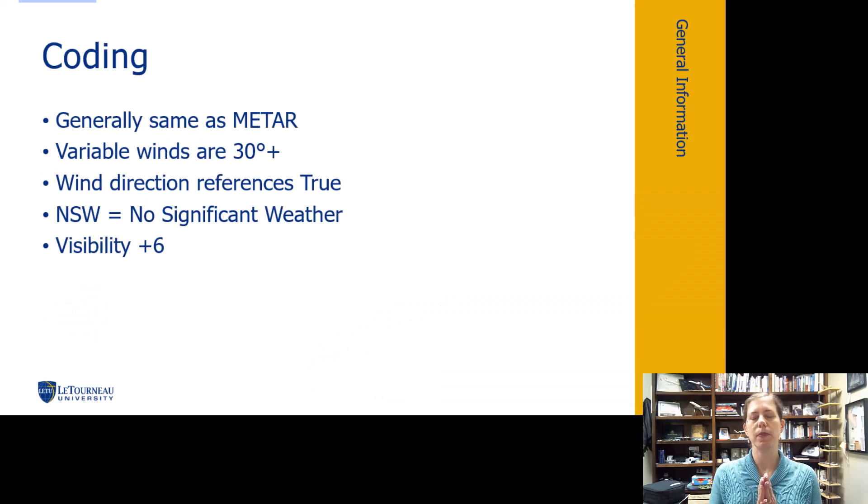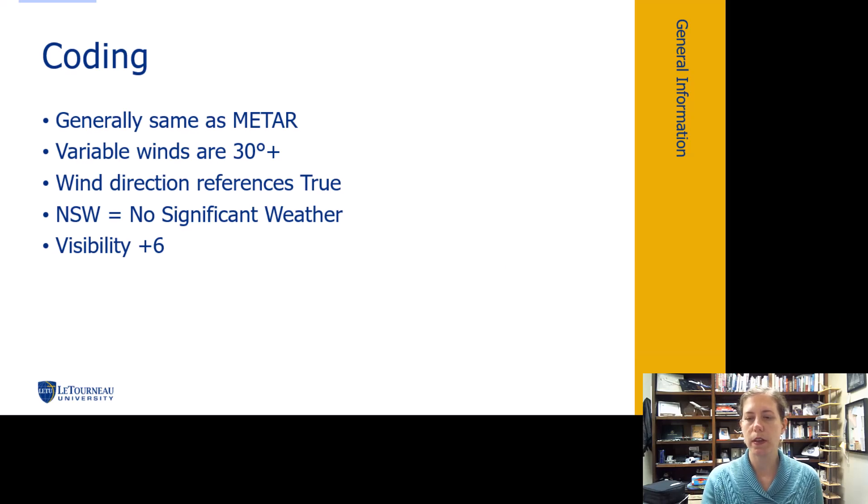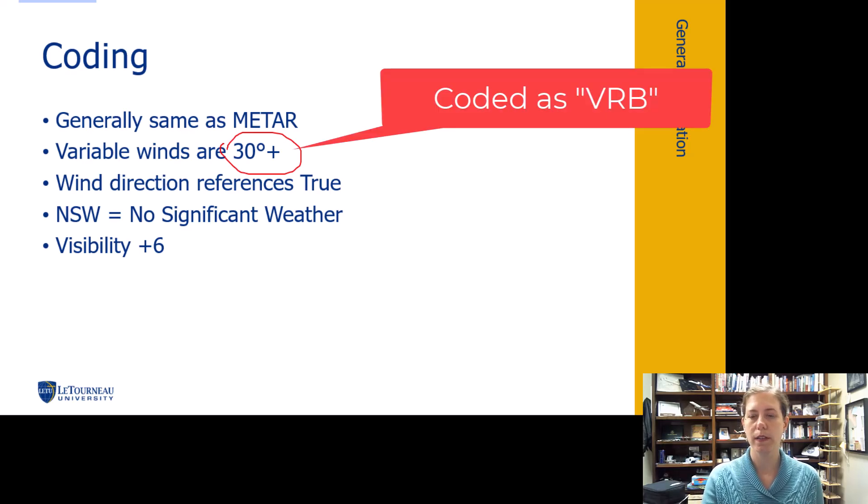Generally, the reason we've been emphasizing you to learn the coding on the METAR is all these different weather phenomenon because we use it on a TAF too, else it is on a PIREP. You just got finished looking at those. So coding is generally the same as a METAR. Variable winds are going to be called if the wind is going to vary in direction by 30 degrees or more. So sometimes we see variable. That's when they aren't sure about the wind direction, it's 30 degrees or more with variability.